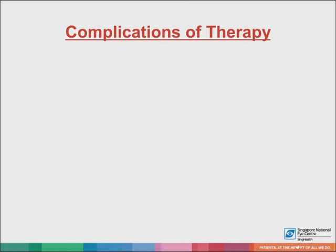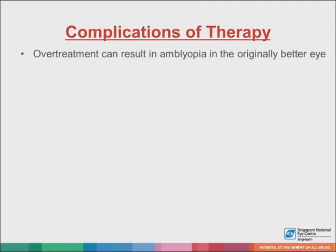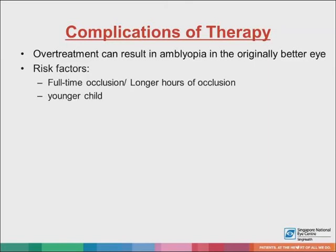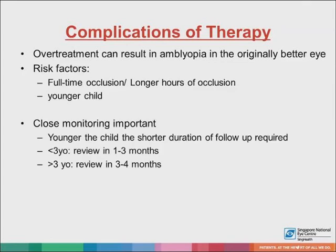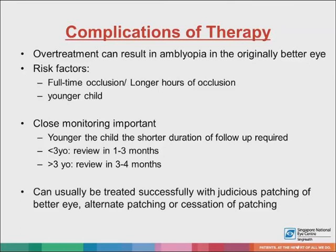With treatment, there can also be complications. Over-treatment can result in amblyopia in the originally better eye. Risk factors include a longer period of occlusion and younger age. Hence, close monitoring is important — the younger the child, the shorter the duration of follow-up required. If the child is less than three years old, review in one to three months; if more than three years old, review in three to four months. If this occurs, it can be treated successfully with judicious patching of the better eye, alternate patching, or cessation of patching altogether.